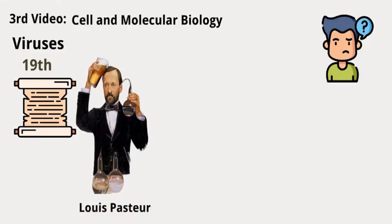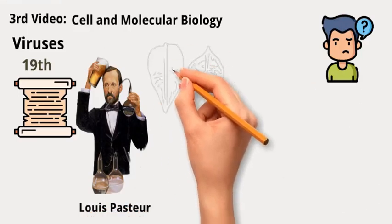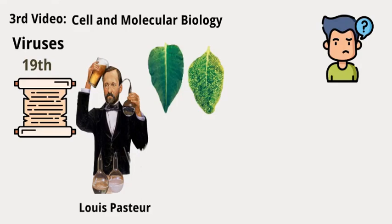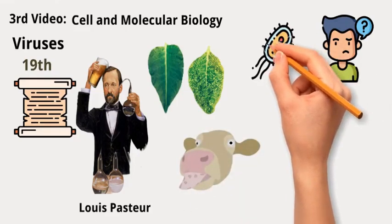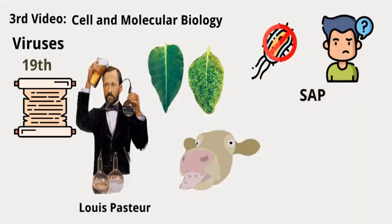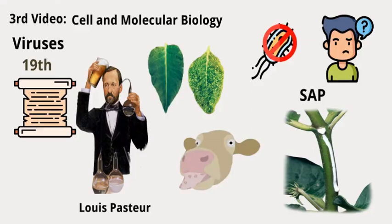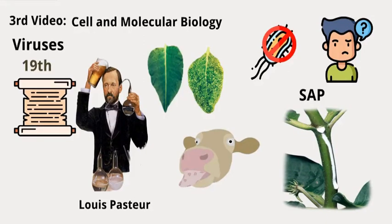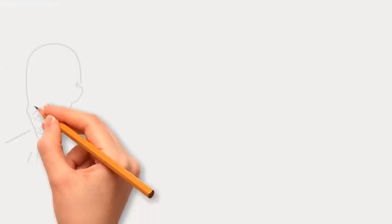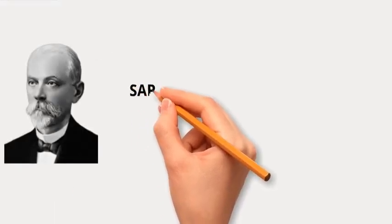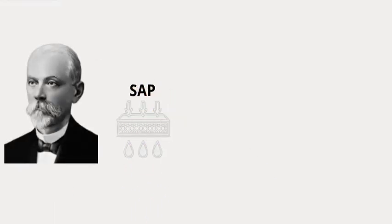However, some diseases like tobacco mosaic disease in tobacco plants and hoof and mouth disease in cattle didn't seem to involve bacteria. Researchers discovered that sap, a fluid transported in vessel elements of plants, when transferred from sick tobacco plants, could spread mosaic disease to healthy plants even when no bacteria were visible under a microscope.